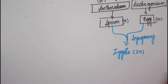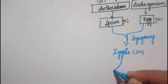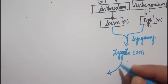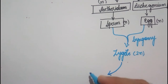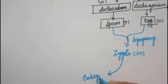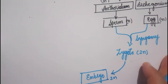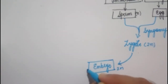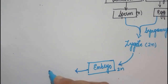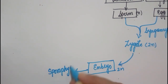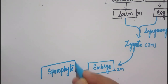The zygote undergoes mitotic divisions and forms an embryo. The embryo is also diploid and further develops into the sporophyte. The sporophyte is the spore-producing structure and is diploid.